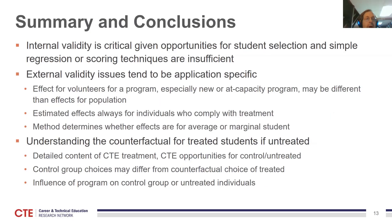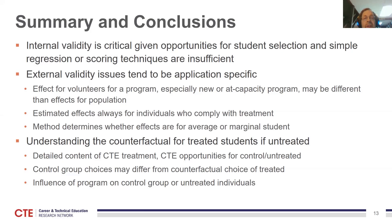To sum up: internal validity is critical given the opportunities for student selection, and simple regression or scoring techniques are insufficient. Many people think matching or scoring techniques are better than linear regression and will get you closer to causal estimates, but the truth is you're just conditioning on exactly the same variables you would have conditioned on in a linear regression — the only difference is allowing for some non-linearities. In practice, 20 years of research show those non-linearities usually don't matter much, matching techniques look a lot like regression techniques, and therefore do little to change your internal validity. So if you wouldn't run a linear regression, matching is probably not going to get you very far.